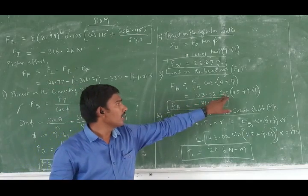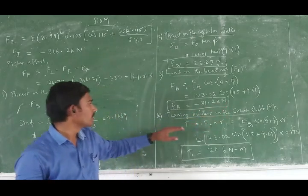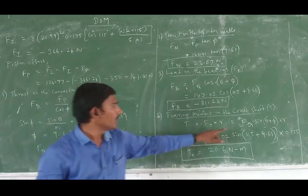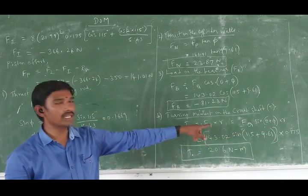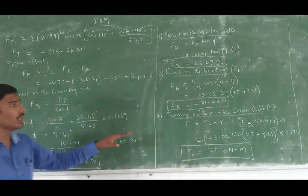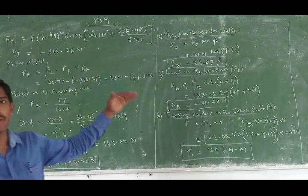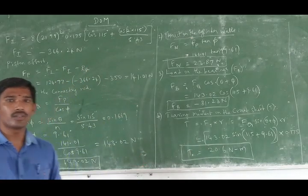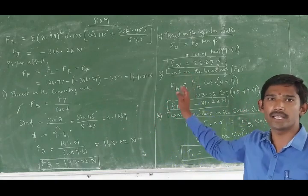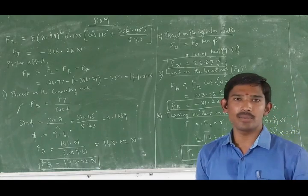Then Ft equals FP plus phi and n value, final value minus 81.23 into r. So T equals FP times r, Fq·sin(θ + φ) times r, and we substitute to get the crank effort. This is what you are going to practice. Subscribe and share — thank you.